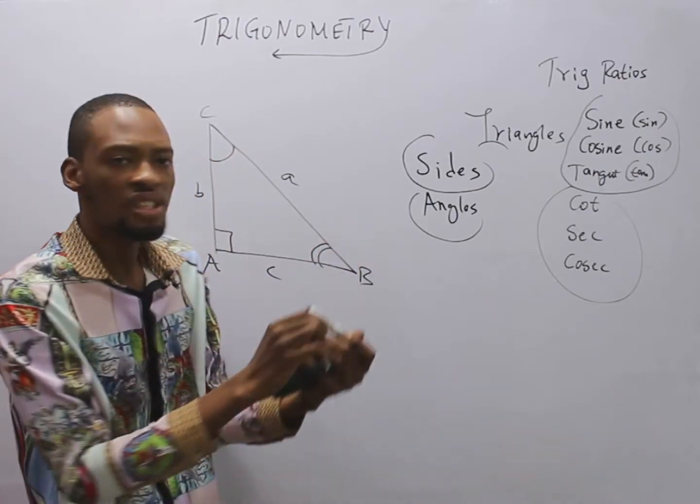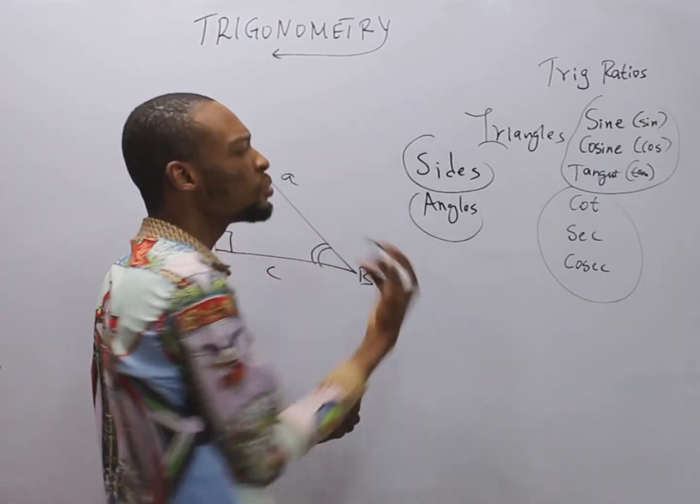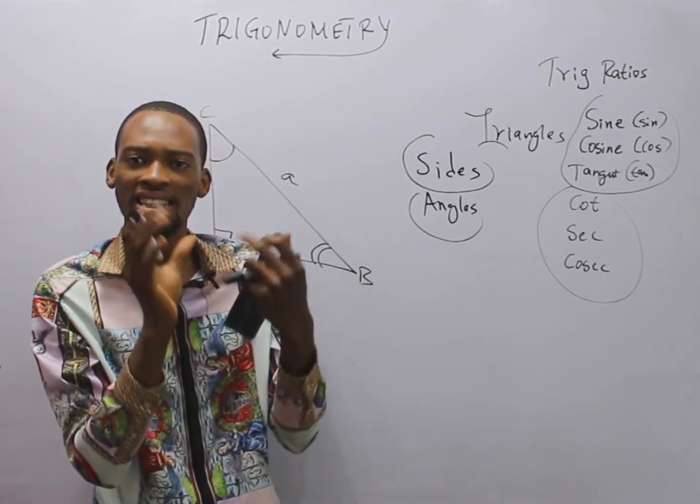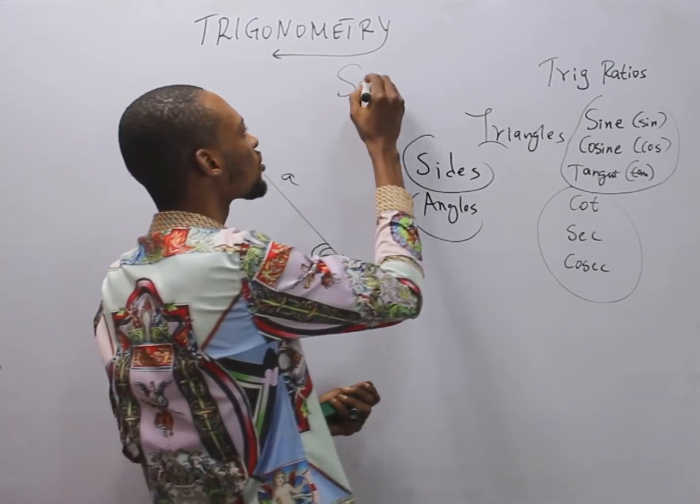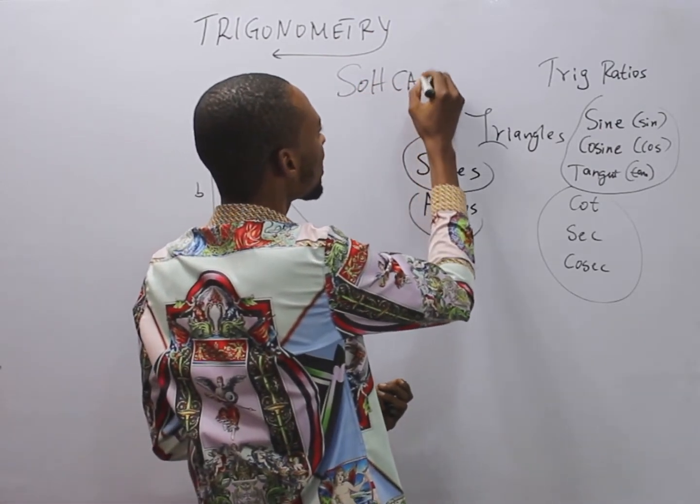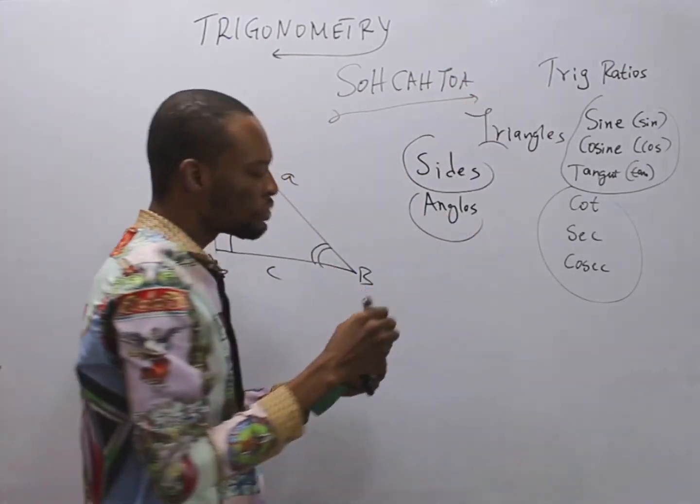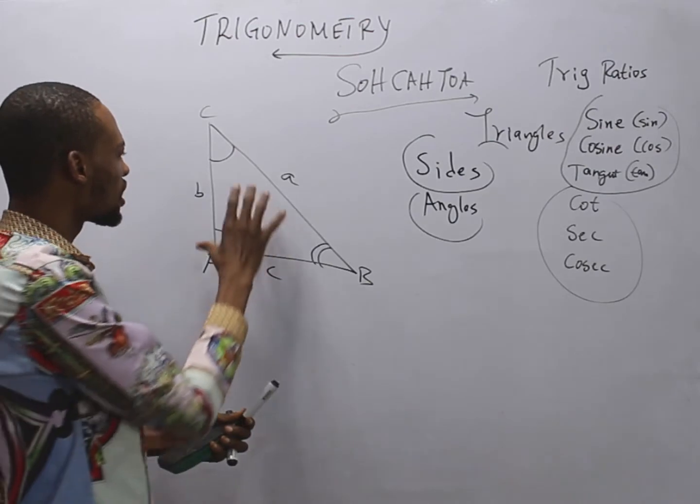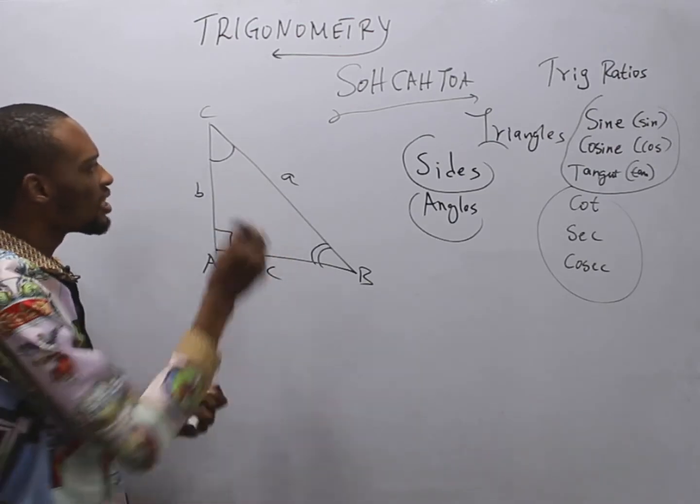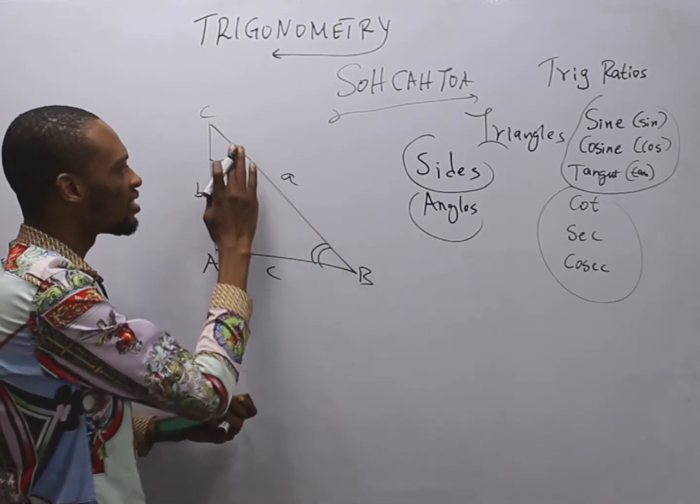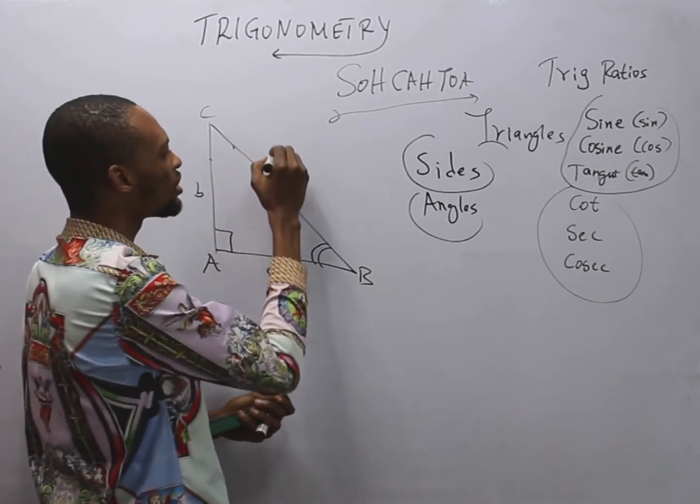Now, while working with trig ratios, this will enable you to remember how they relate easily. Before we go into that, given this triangle, this longest part is called the hypotenuse.